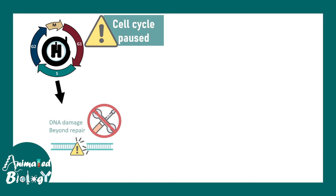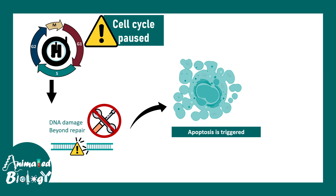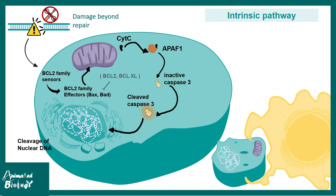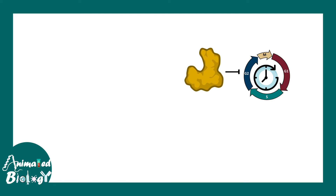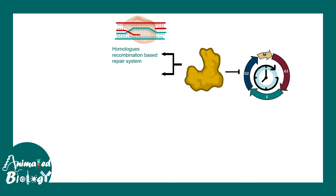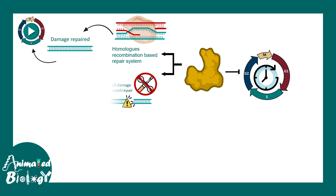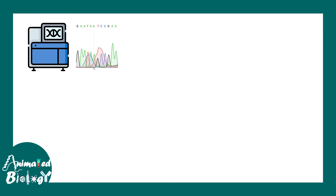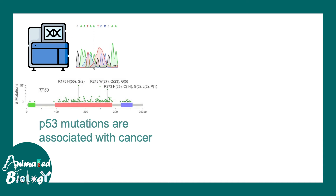If the cell cycle is paused but the damage is beyond repair, the cell is induced to undergo apoptosis. P53 coordinates with caspase-3 and targets the intrinsic apoptosis pathway — it activates BAX and BAD, which poke holes in the mitochondrial membrane, causing cytochrome C to leak out and ultimately activating caspase-3 to trigger apoptosis. This prevents segregation of faulty chromosomes, since failure to do so might lead to tumor or cancer formation. Indeed, many P53 mutations are associated with cancer.